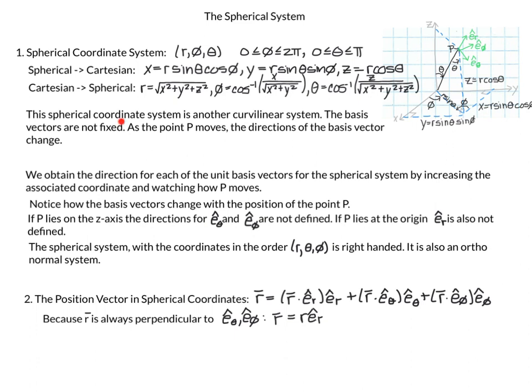The spherical coordinate system is another curvilinear system, and also another system where the basis vectors are not fixed. As we move around in three-dimensional space, the directions of the basis vectors change. We obtain the direction for each unit basis vector for the spherical system by increasing the associated coordinate and watching how P moves, much like we did for the cylindrical system.